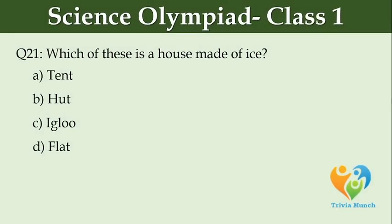Which of these is a house made of ice? Option A: Tent. Option B: Hut. Option C: Igloo. Option D: Flat.